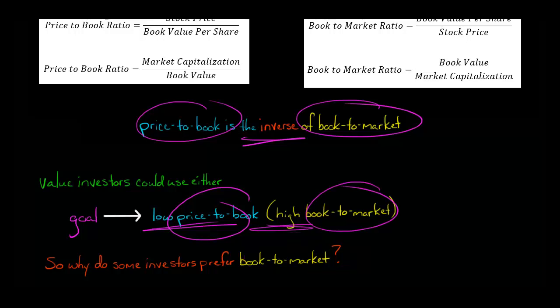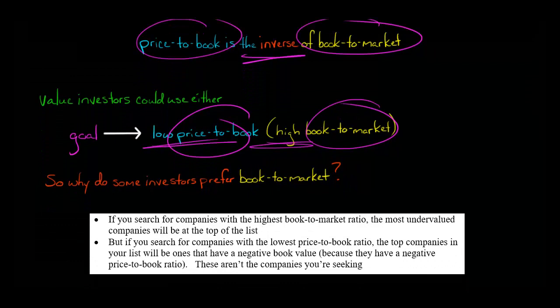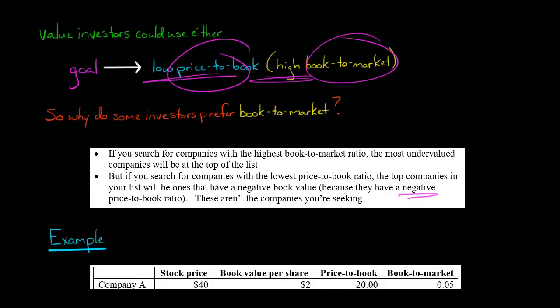And if you're wondering why, it ultimately comes down to sorting a list of companies to find which ones are going to be the best value and easily screen them. It's a little more difficult when you use the price-to-book ratio. That's because if you're looking for the lowest price-to-book ratio and you sort companies lowest to highest, the ones at the top of your list are actually going to be ones that have a negative price-to-book ratio, because they have a negative book value. Those are companies you probably don't want to be investing in as a value investor.